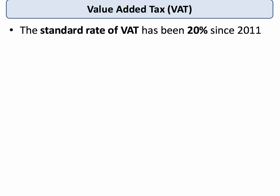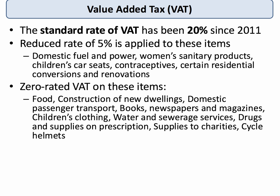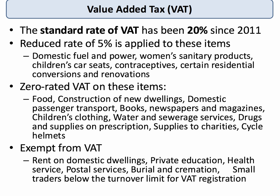VAT is a good example of an indirect tax, and the standard rate of VAT has been twenty percent since 2011. However, there are some exemptions and reductions: a reduced rate — a minimum of five percent in the EU — is applied to items such as women's sanitary products, contraceptives, and children's car seats. There is zero-rated VAT on items such as books, newspapers, new houses, prescription drugs in the NHS, children's clothing, and cycle helmets.